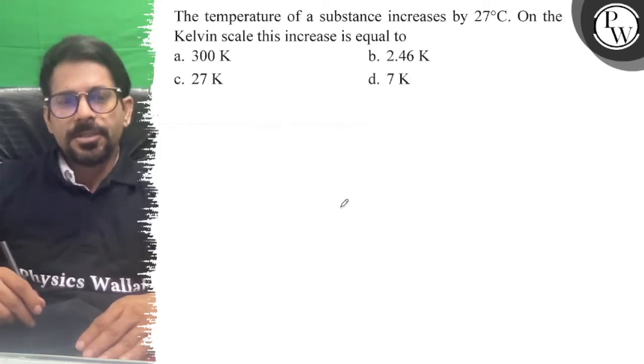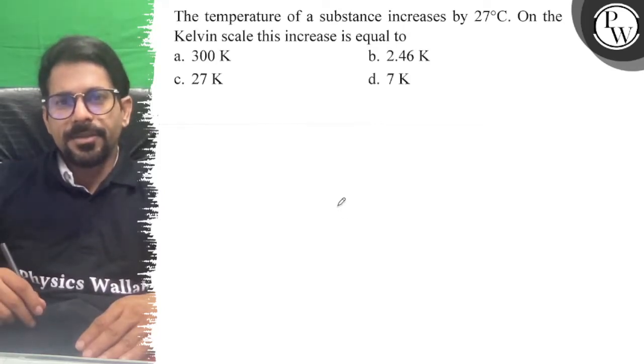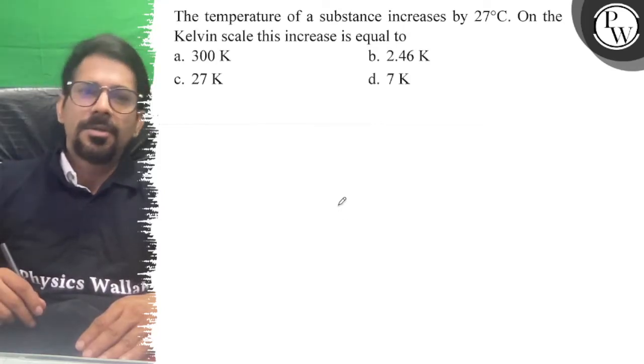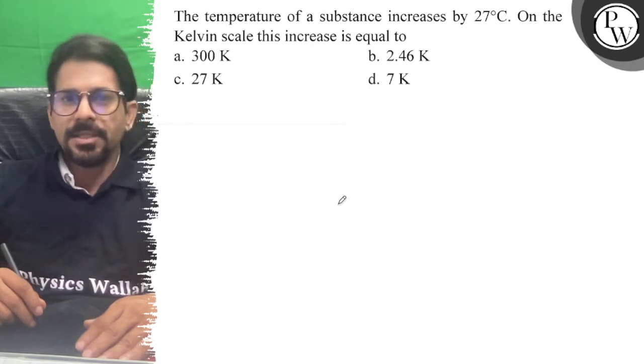Hello, let's see the question. The temperature of a substance increases by 27 degrees Celsius. On the Kelvin scale, this increase is equal to?